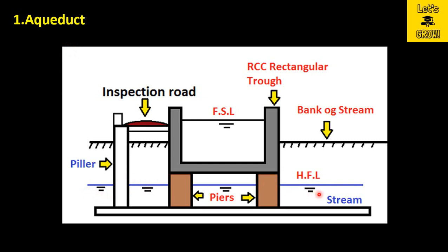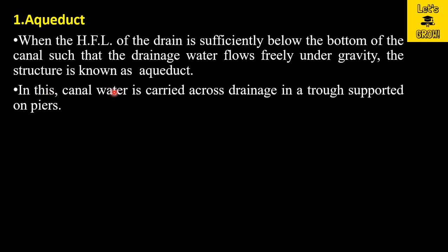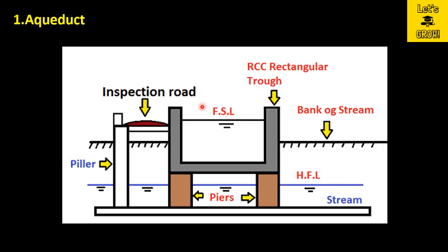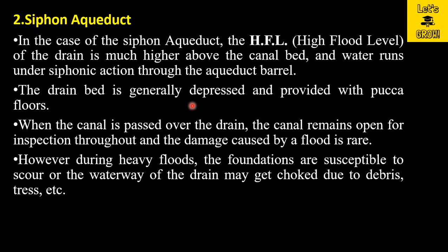In this case, water will freely move under gravity below the canal — there is no siphonic action because the high flood level of the stream is below the canal bed. The canal water is carried across the drainage in a trough supported on piers. Here you can see two piers supporting this rectangular trough. An inspection road is also provided near one bank of the canal for inspection purposes along the length of the canal.